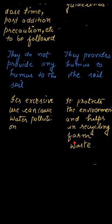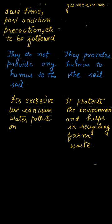For example, a farmer doing agriculture produces some agricultural waste and then converts it into manure. By doing so, he is protecting the environment and recycling the farm waste. So that's it for this question — I hope the concept is clear to all of you. Thank you for your attention.